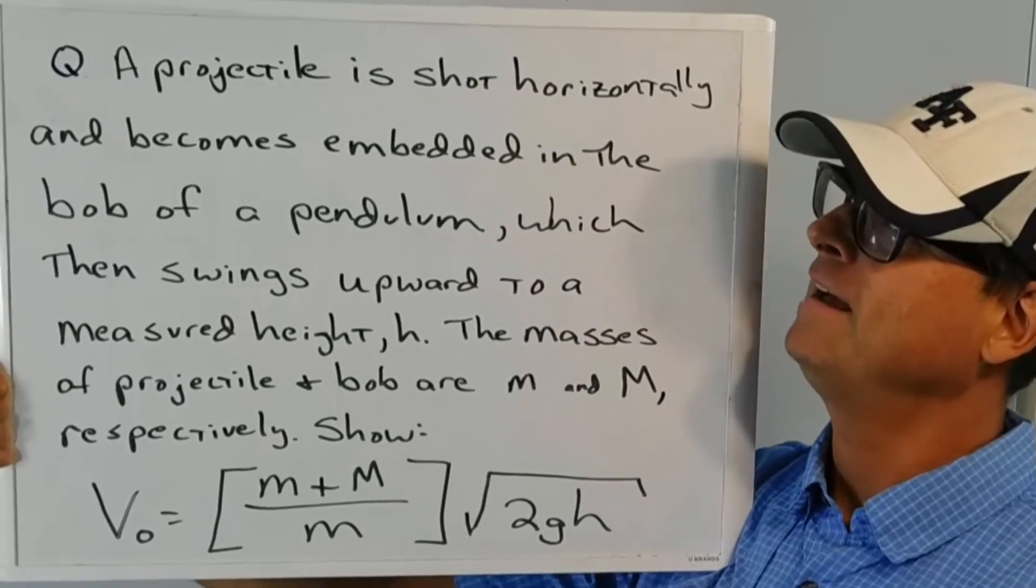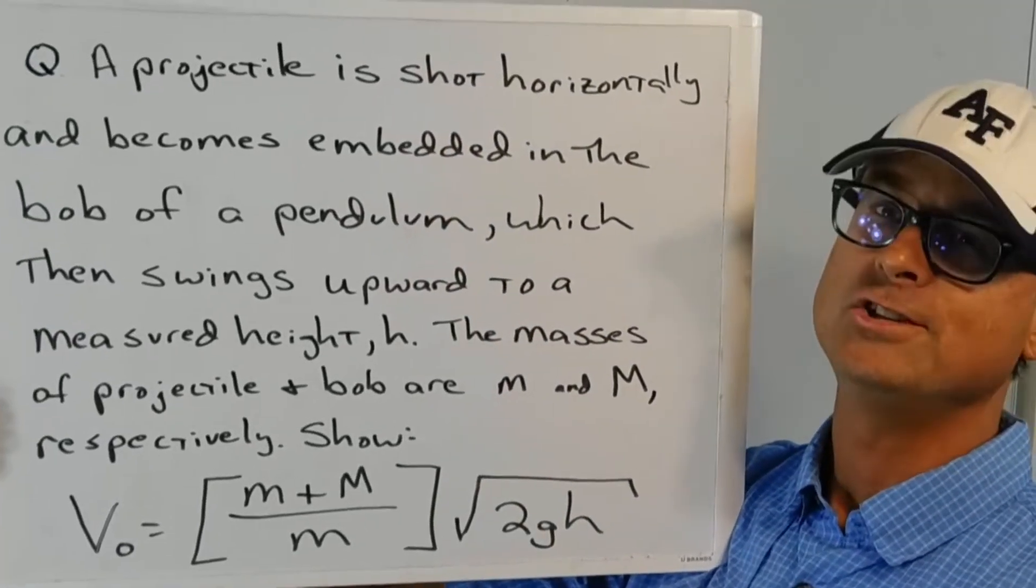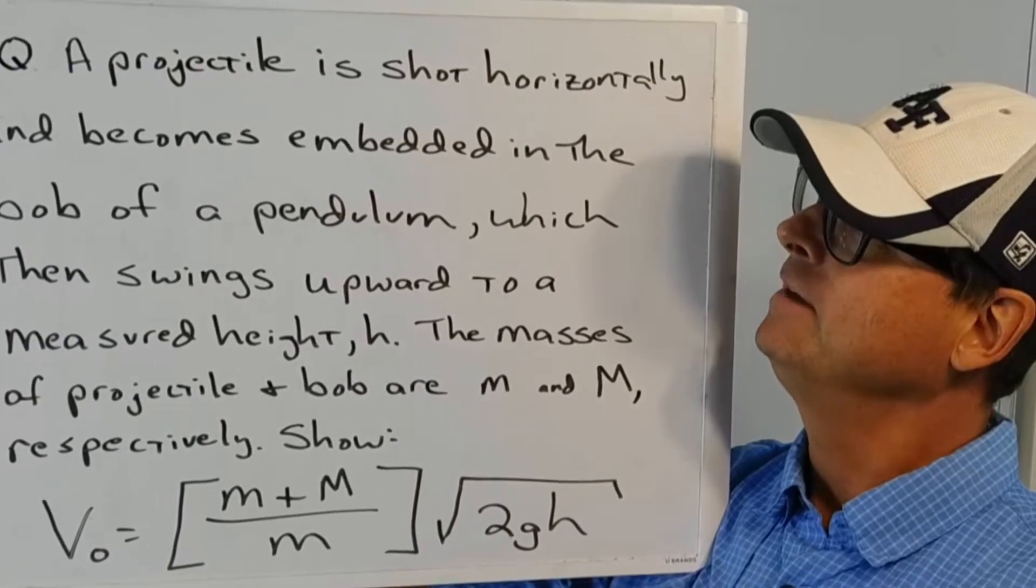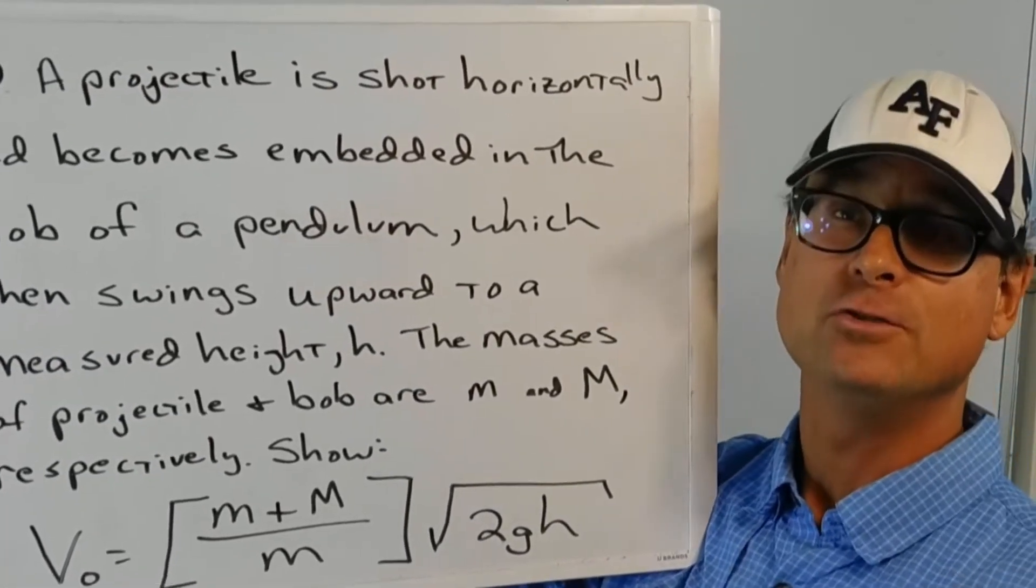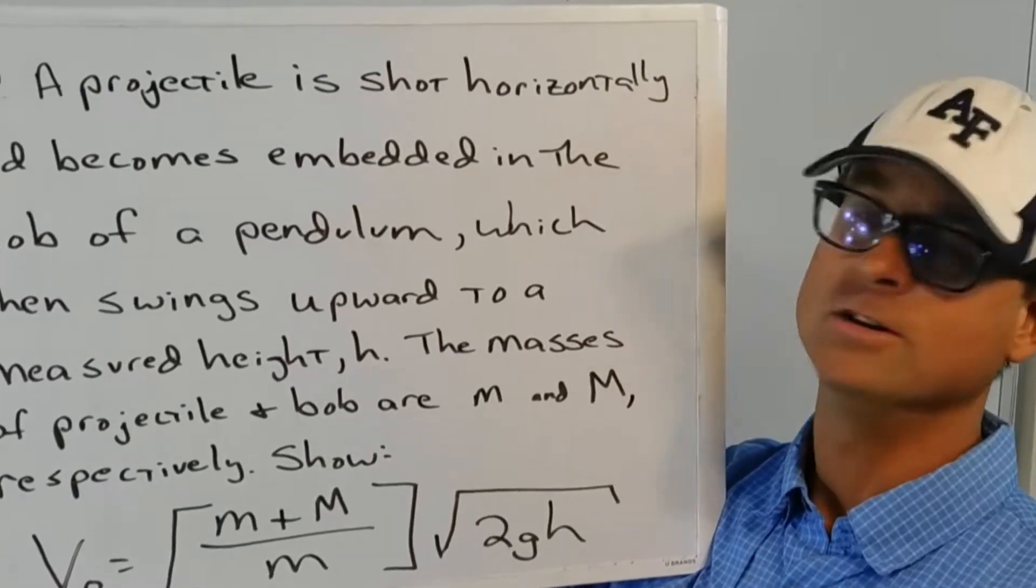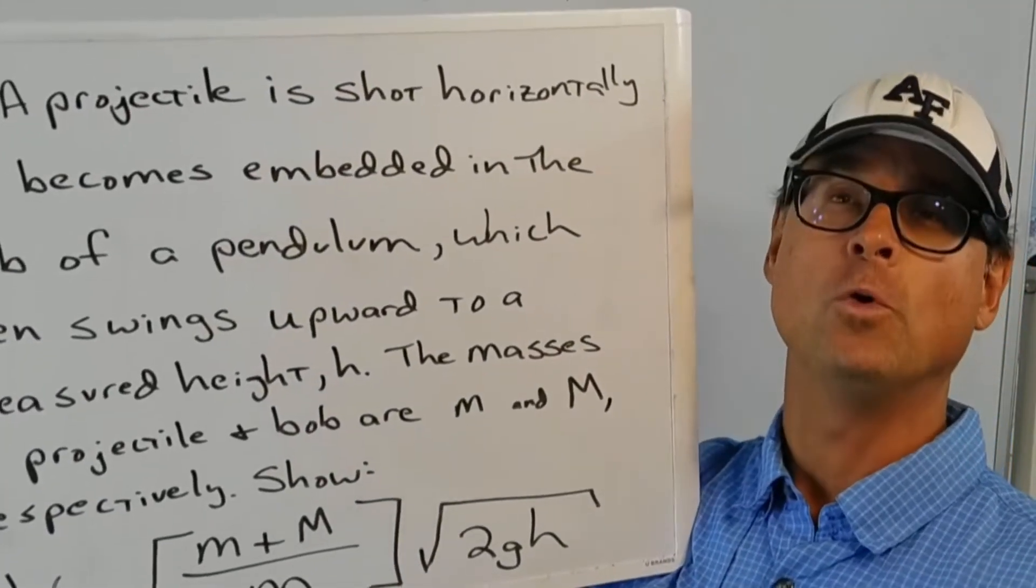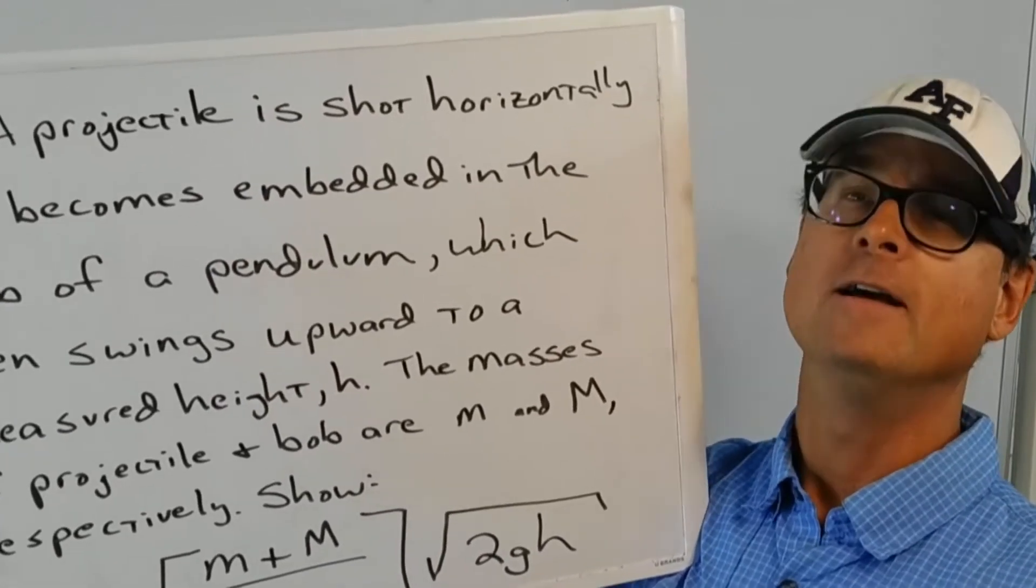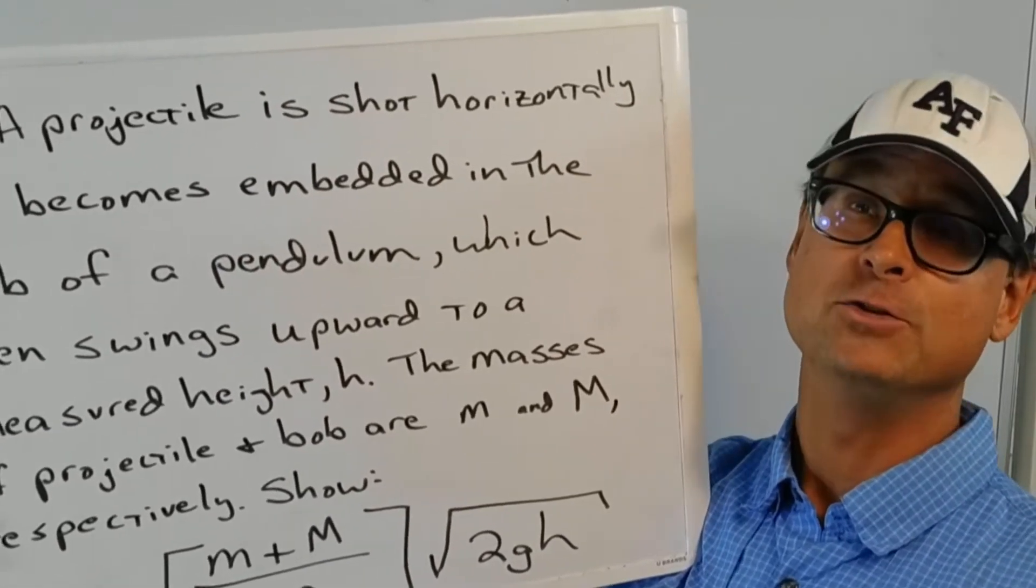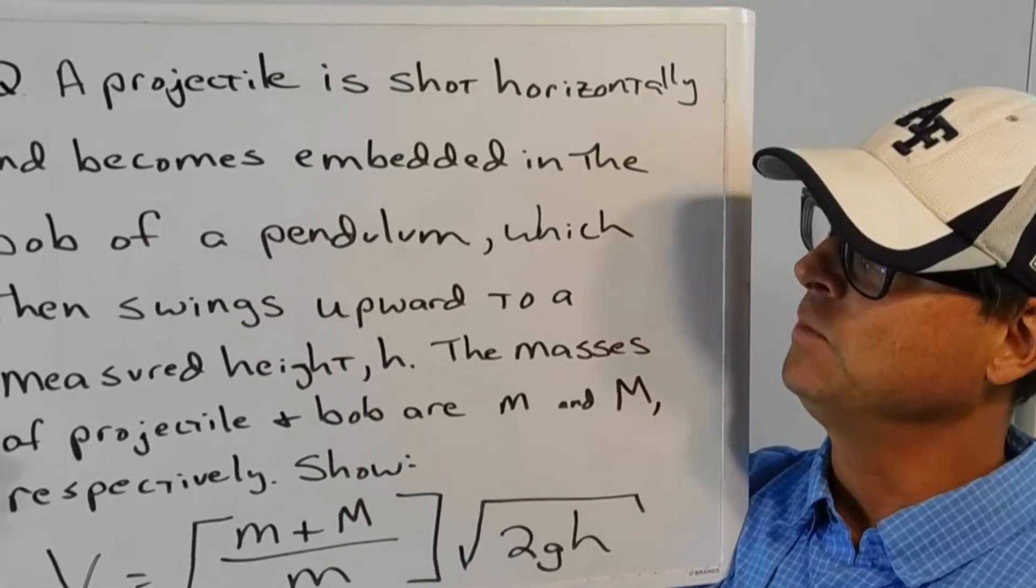Hi, physics boss man coming back at you. A projectile is shot horizontally and becomes embedded in the bob of a pendulum. This is a contraption known as the ballistic pendulum. It's useful for determining the velocity of a projectile like a bullet by measuring something that's a lot easier to measure like the height that a pendulum swings upward.